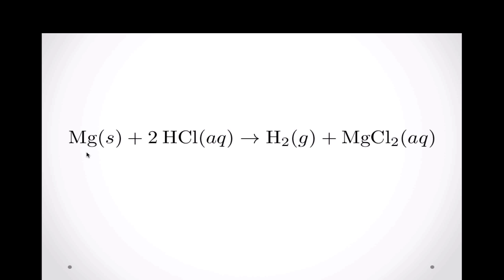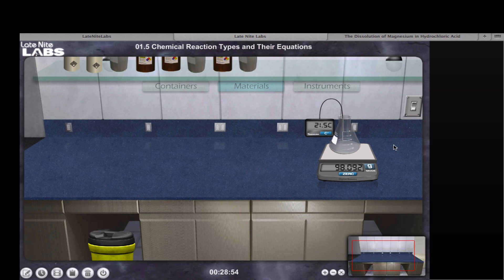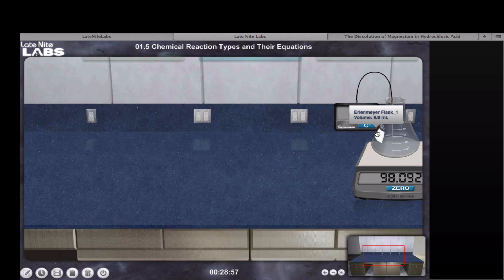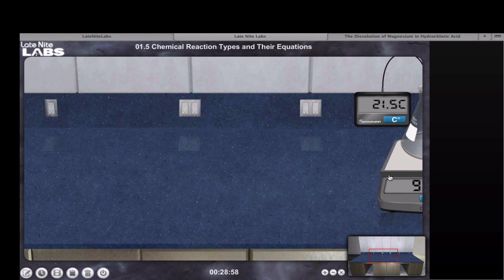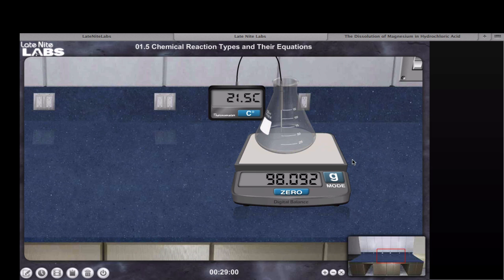So the balanced equation includes one mole of magnesium solid and two moles of hydrochloric acid, to form one mole of H2 gas and one mole of aqueous, or dissolved, MgCl2. In our case, the hydrogen gas escaped, and the aqueous magnesium chloride solution is sitting in the bottom of the reaction flask.